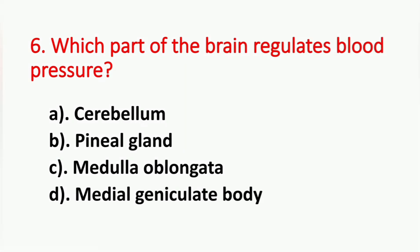Question number 6. Which part of the brain regulates blood pressure? Option A: Cerebellum. Option B: Pineal gland. Option C: Medulla oblongata. Option D: Medial geniculate body. The answer is Option C, Medulla oblongata.